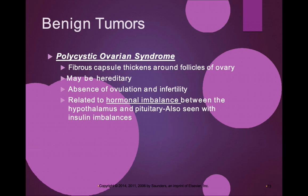PCOS — polycystic ovarian syndrome — involves a fibrous capsule that thickens around the follicles of the ovary. It can be hereditary and is characterized by absence of ovulation and infertility. This condition is related to hormonal imbalances, possibly between the hypothalamus and the pituitary — particularly luteinizing hormone (LH) and follicle-stimulating hormone (FSH) from the anterior pituitary.